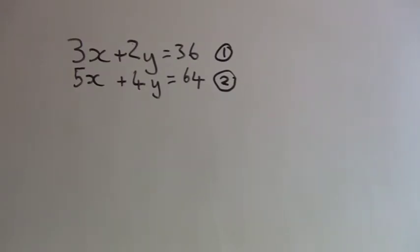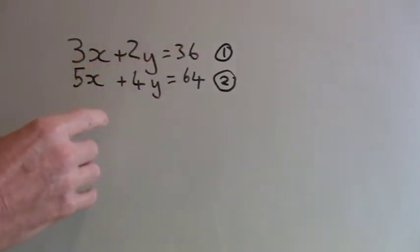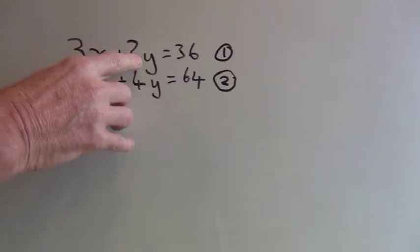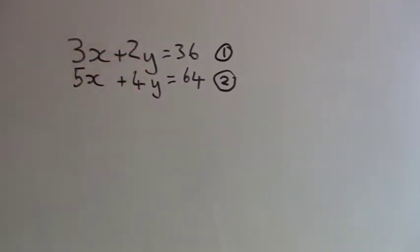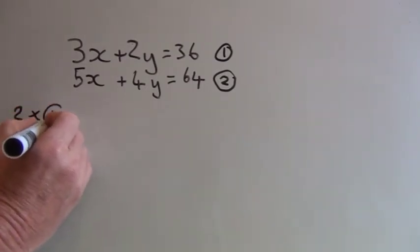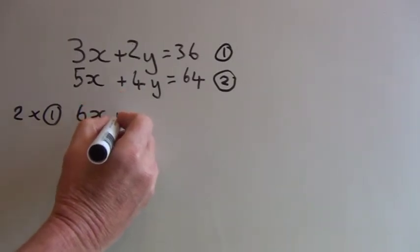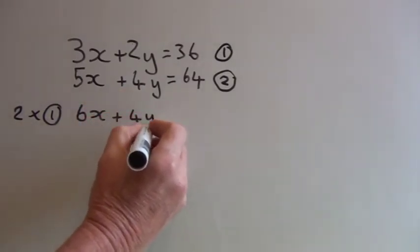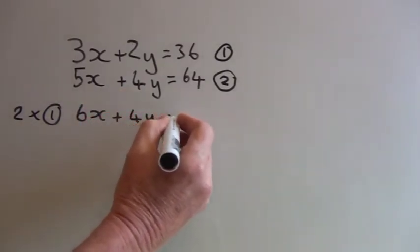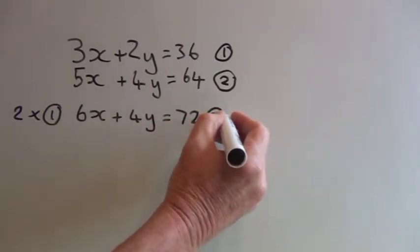Now if you notice on equation one, we can multiply this by two to give us the same value of y as for equation two. So two times equation one gives us 6x plus 4y equals 72, and we'll label this one as equation three.